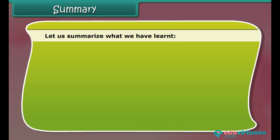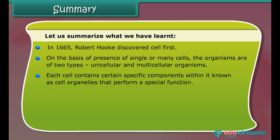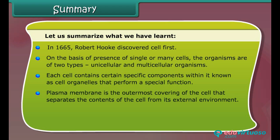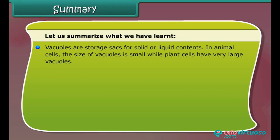In summary: in 1665, Robert Hooke discovered the cell first. On the basis of the number of cells, organisms are of two types — unicellular and multicellular. Each cell contains specific components known as cell organelles that perform special functions. The plasma membrane is the outermost covering of the cell, separating it from its external environment, and works as a selectively permeable membrane by allowing entry and exit of some materials while preventing others.